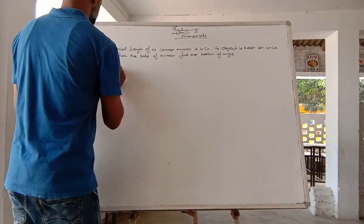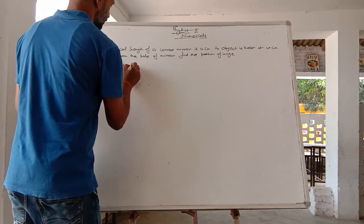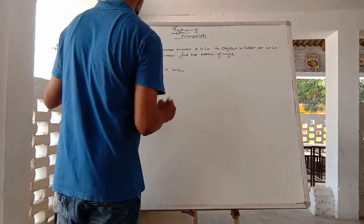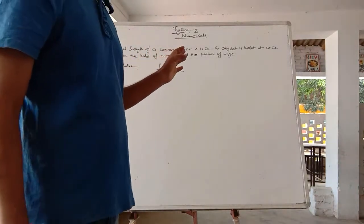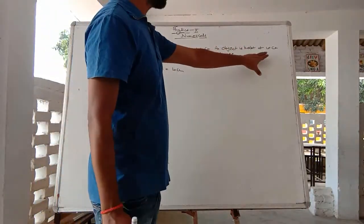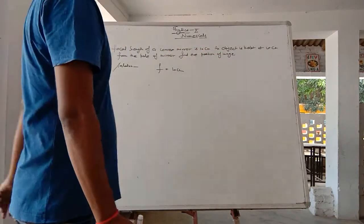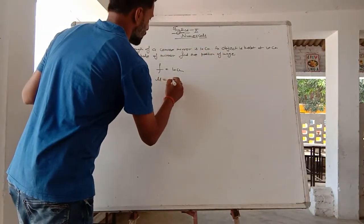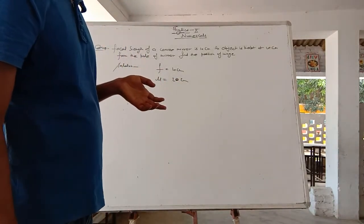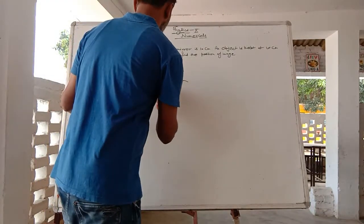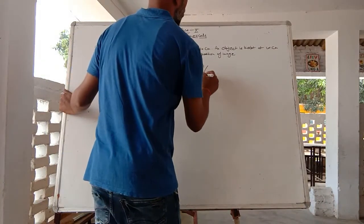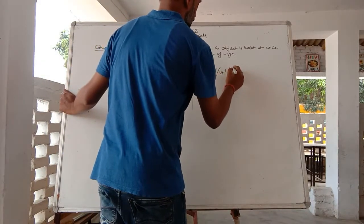Which means f is equal to 10 cm. If you have a convex mirror, the value of f is positive. Then an object is kept, which means the distance of the object u is 20 cm. If you have a convex mirror, the value of u will be negative. So v must be found using the formula for focal length: 1 upon f is equal to 1 upon v plus 1 upon u.